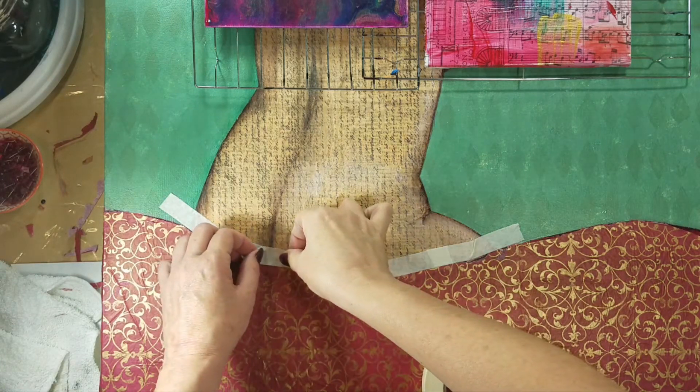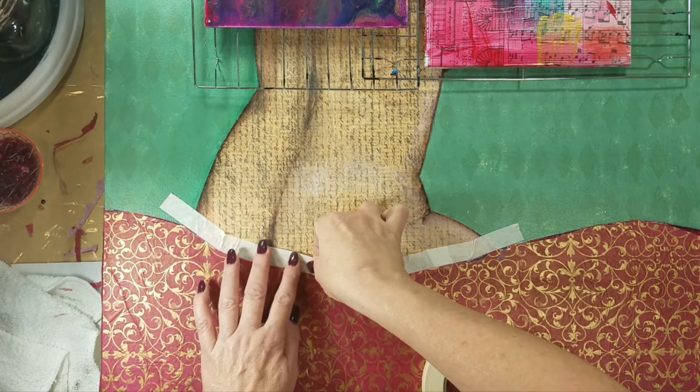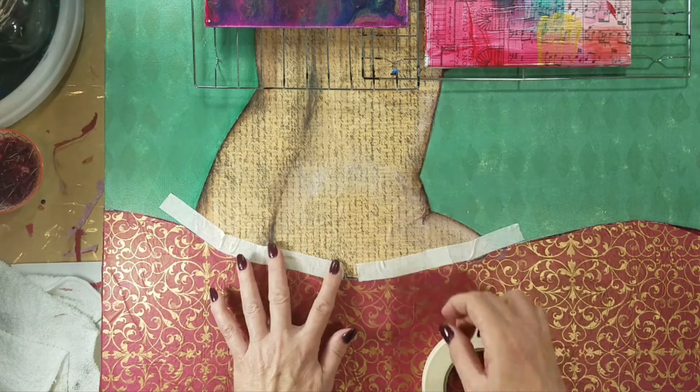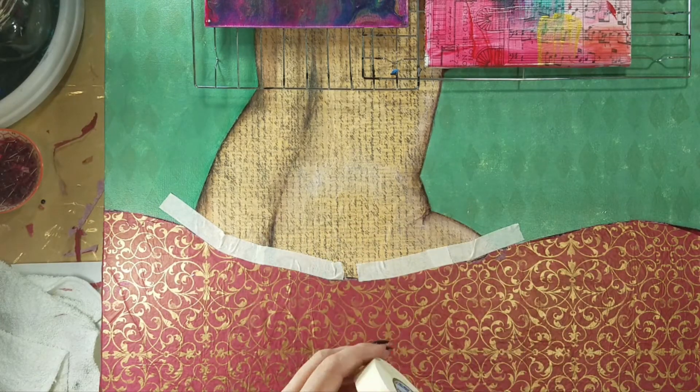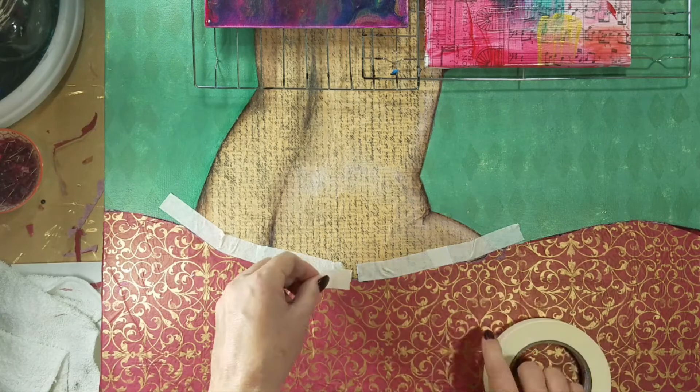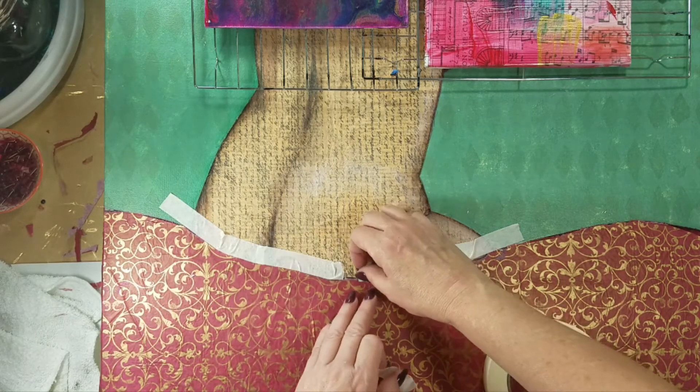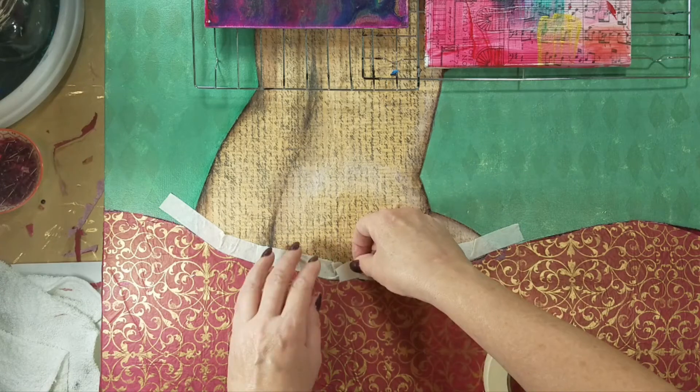She is made of several layers of tissue paper that have, some have print on them, some have stamping, some have handwriting. And they all have paint on them, and then they're all layered up together.